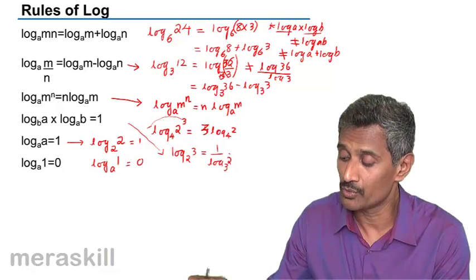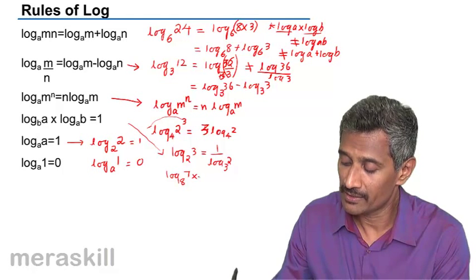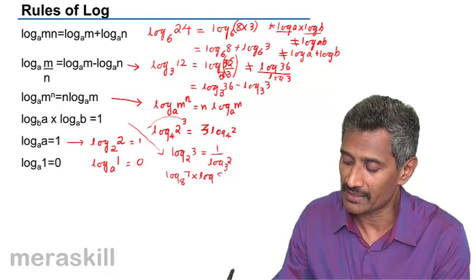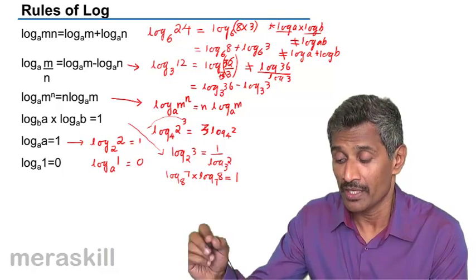Let's take another example: log of 7 to the base 8 into log of 8 to the base 7 would be equal to 1. We are just interchanging the power and the base.